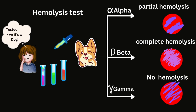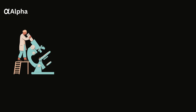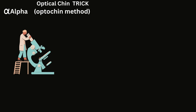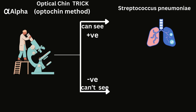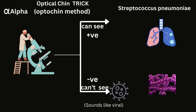To test the bacteria belonging to the alpha group, we view them through an optical lens and adjust our chin appropriately — we use the optochin method. If we are successful in viewing the bacteria, then our lungs might have been close to the bacteria on the slide and we probably might be infected by pneumonia. If we couldn't view it properly, the bacteria might not be present and it may be present in the air around us like a viral infection. Therefore, in this condition where we get a negative optochin result, it is streptococcus viridans.